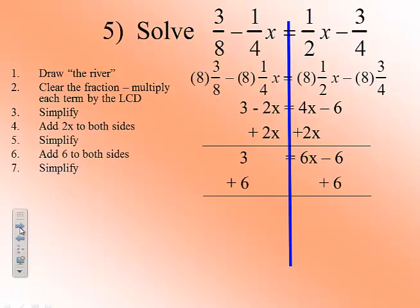When we simplify, we have that 9 equals 6x. Lastly, divide both sides through by 6.